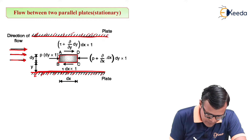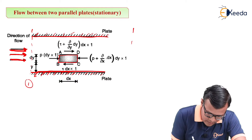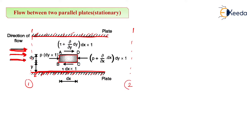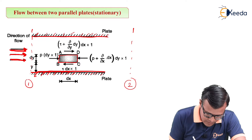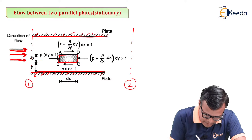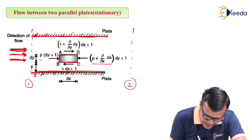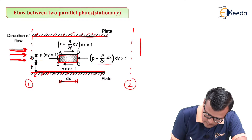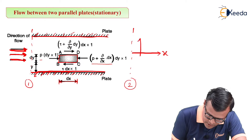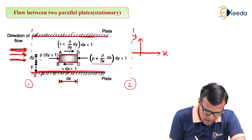Say for example, if this is the direction of flow, then consider point 1 and point 2. For this direction, the pressure at one face is P and at the other face is P plus (∂P/∂x)·dx, where dx is the distance in the x-direction. We are considering the axis system where this is the x-direction and this is the y-direction.